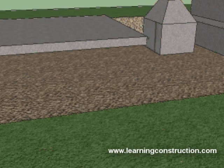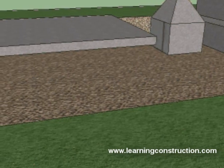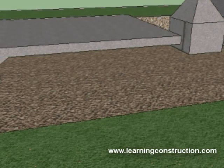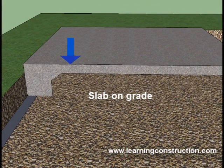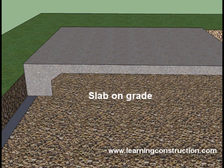The first one will be the slab foundation or slab on grade. This type of foundation will be surrounding the structure. In other words, the footing itself will be around the structure and it will have a slab, which typically is poured monolithically, which means poured at the same time as the footings. It's a fairly quick way to make a foundation and a slab at the same time for whatever type of dwelling or structure.